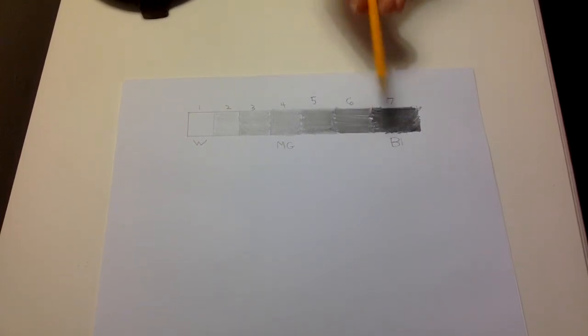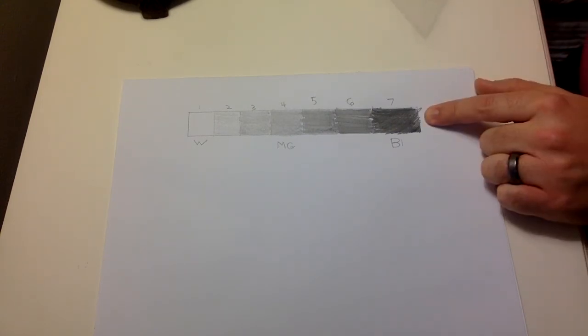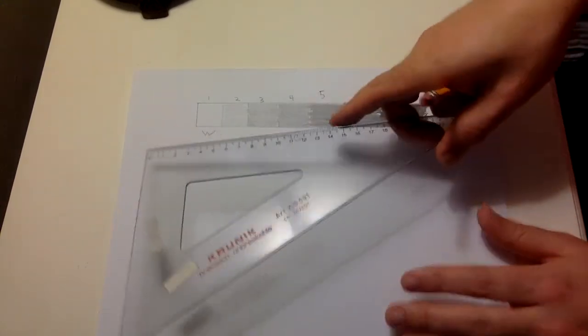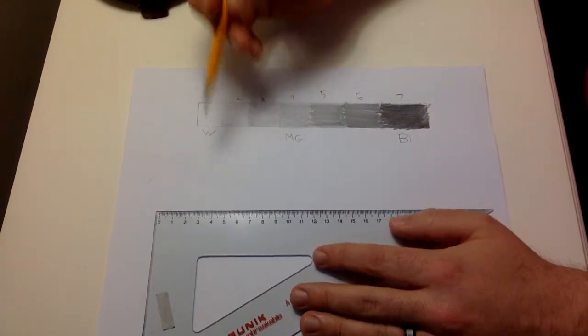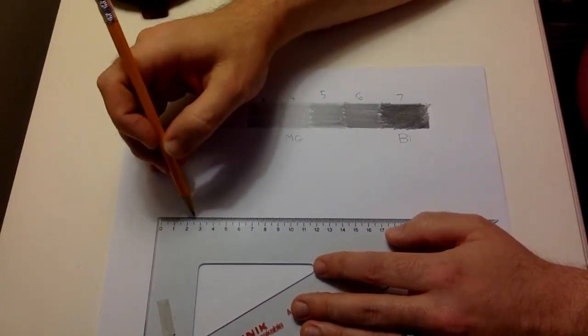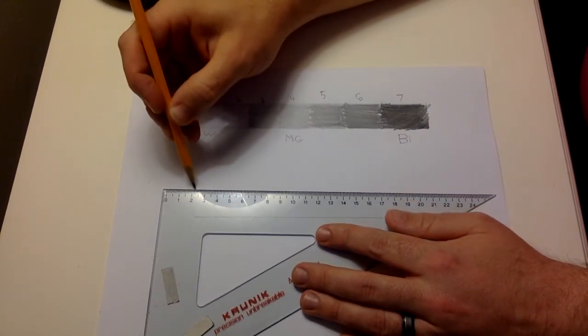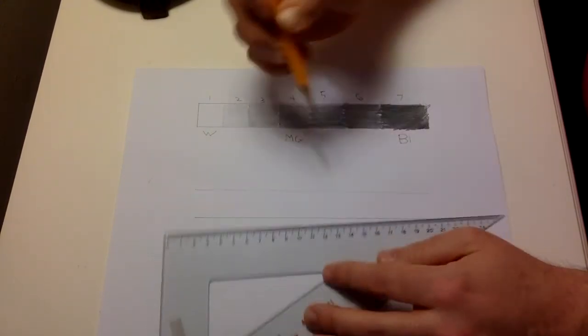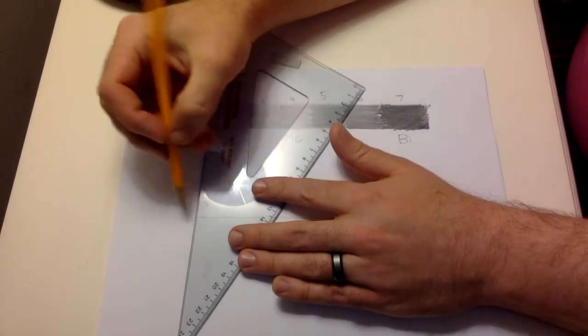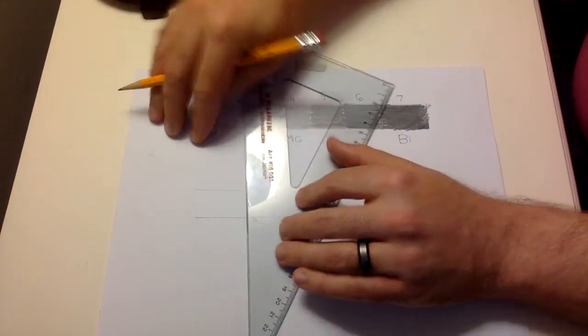Of course, pencil again is not perfectly black, but that's as dark as I'd like you to try to get it. Alright. And then I'm going to have you do one more, another rectangle. So I'm drawing, it's going to be about the same size, not perfectly same size, but about an inch high and eight, nine inches across.